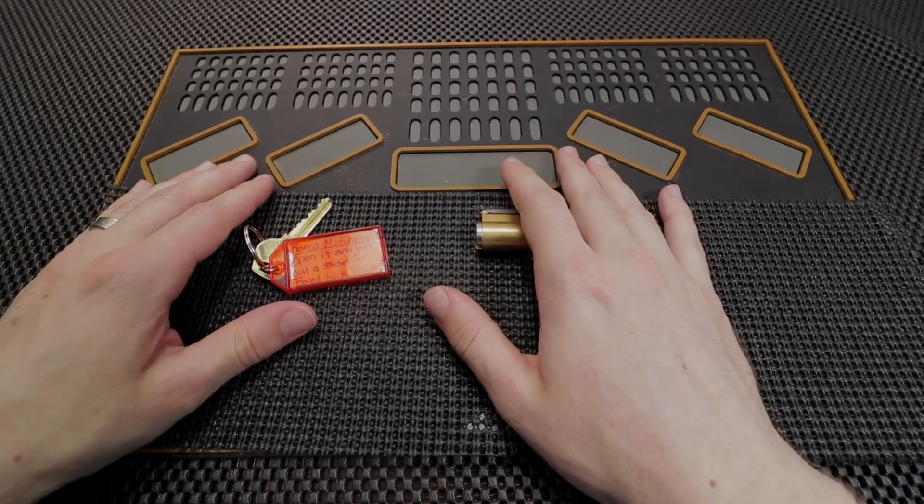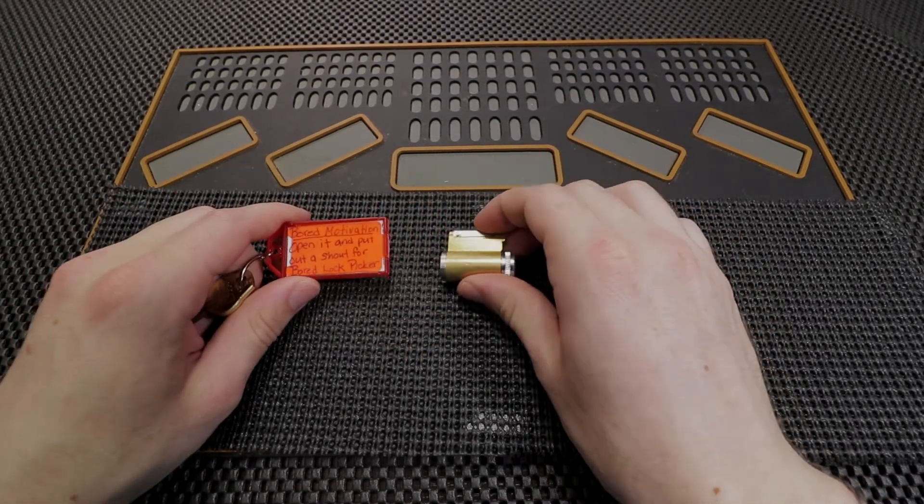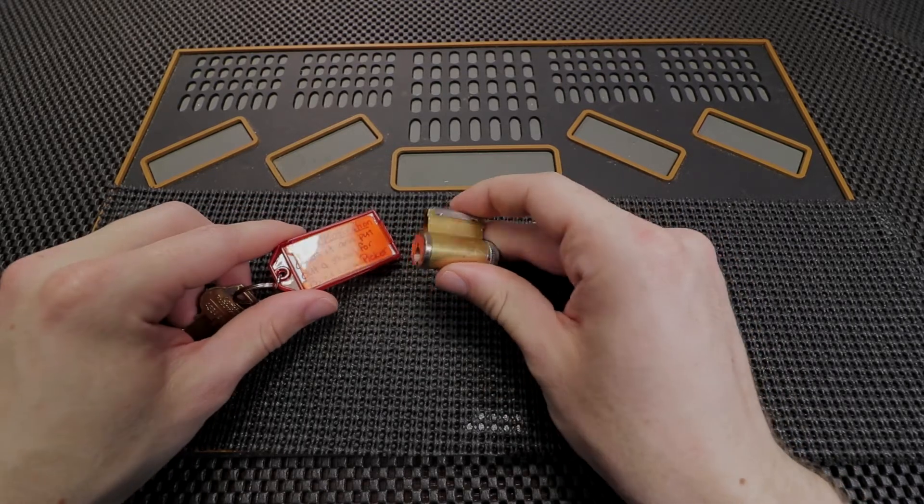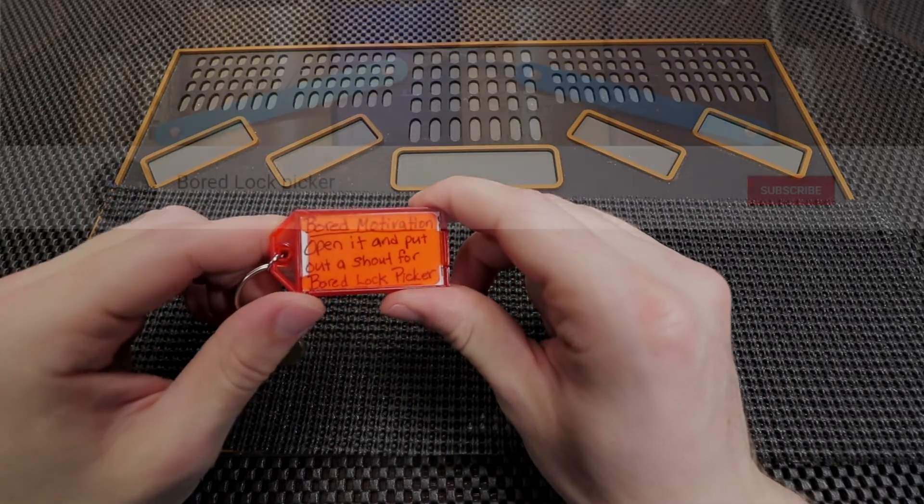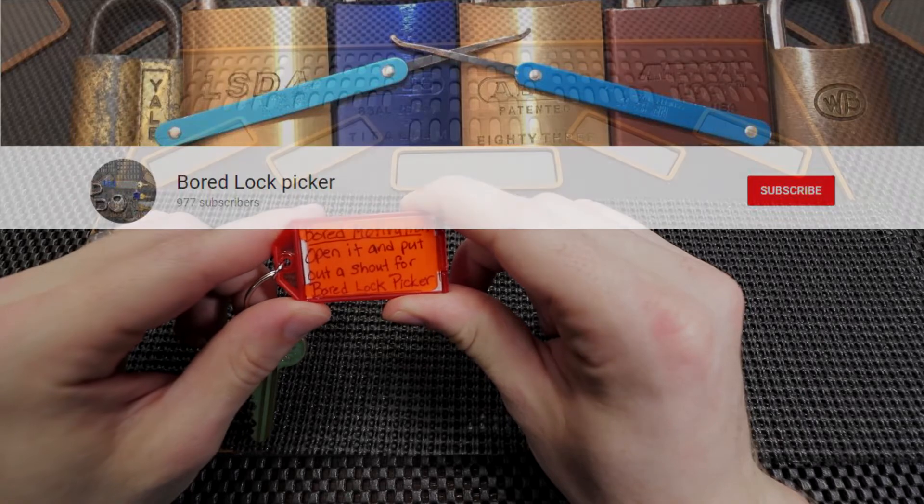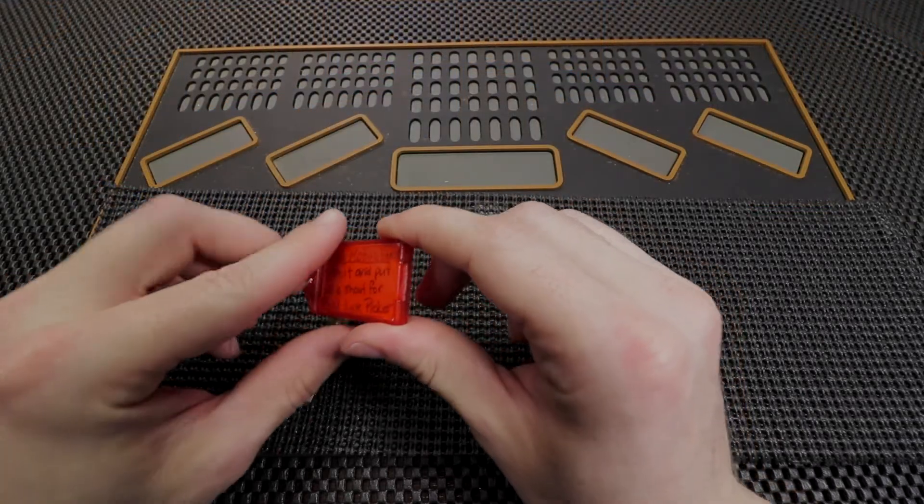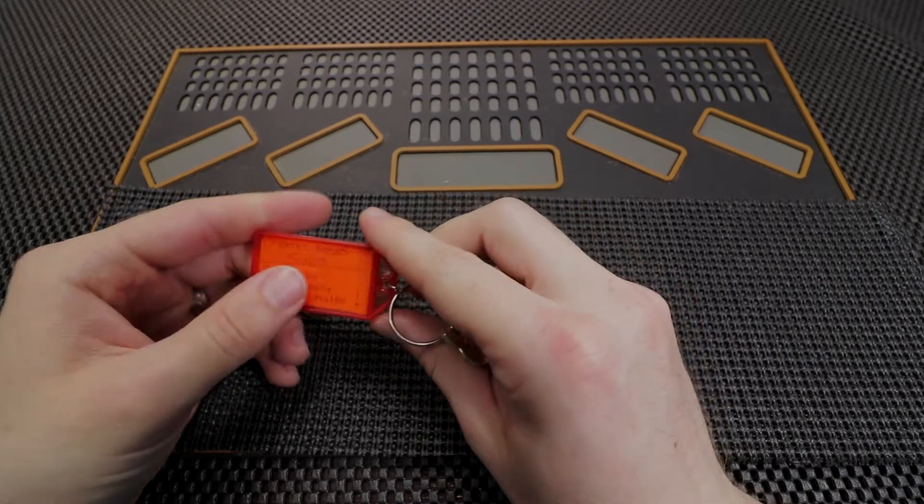So just as a fun little idea, the person that sent this to me decided that we're going to send this lock out to the community, and whenever you get this lock and you pick it open or receive it, just please give the Bored Lock Picker a shoutout. This is called the Bored Motivation Lock. Just open it and put it on your channel and give him a shoutout, and hopefully we'll be able to get him some more subscribers so he can reach the 1,000 subscriber mark.